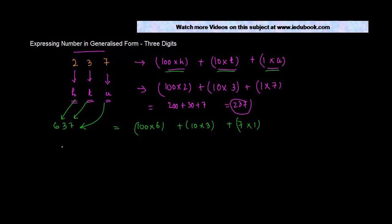Right, you want to take one more example? Let's say you have 739. 100 into H, H is the value of the digit at hundredth place, plus 10 into 3, 3 is the value of the digit at tens place, plus 1 into 9, 9 is the value of the digit at units place.